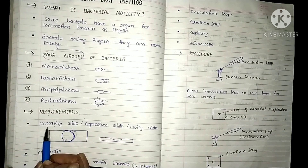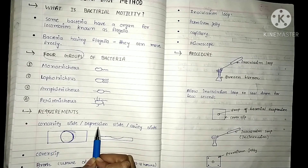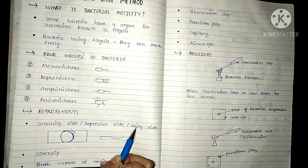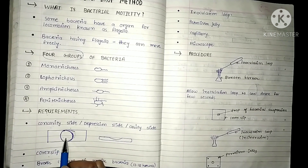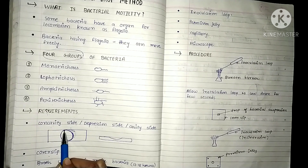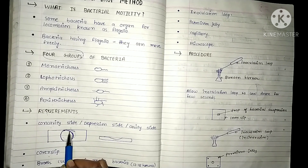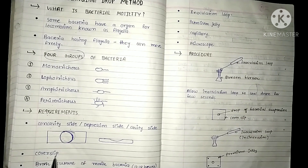Now let's check out the list of requirements needed to perform this experiment. First, we need a concavity slide, also known as a depression slide or cavity slide. This slide is slightly different from a normal slide because it has a small depression or cavity at the center.